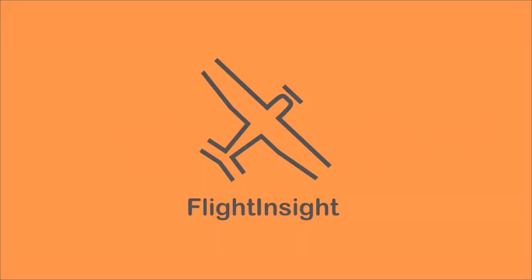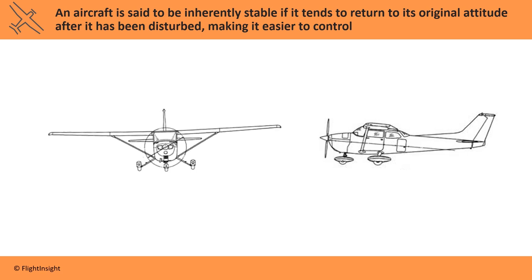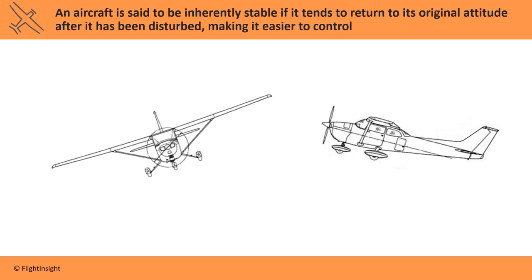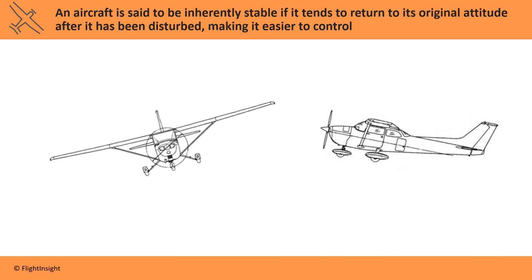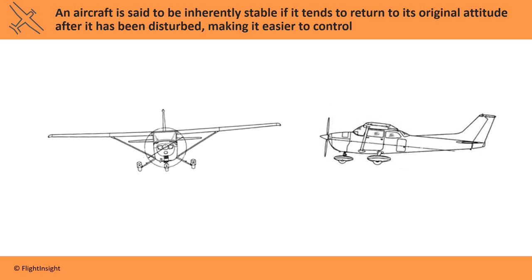When we say an aircraft is inherently stable, we mean that it has a tendency to return to its original attitude after it's been disturbed by wind or control input. This makes it easier to control. As the aircraft is disturbed about one or more of its axes, its stability allows it to return to where it originally was.